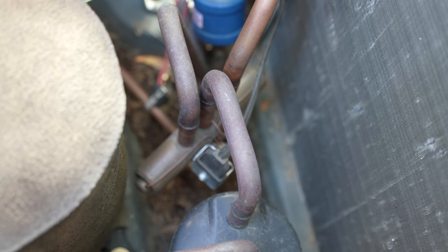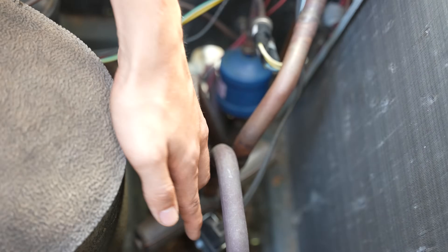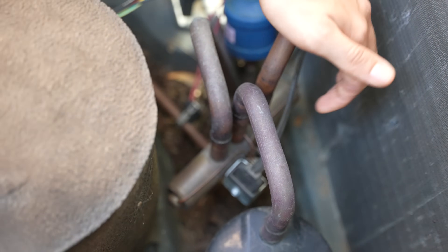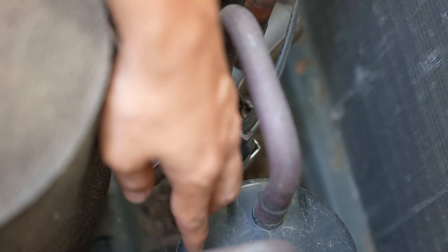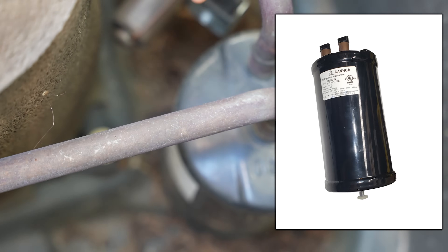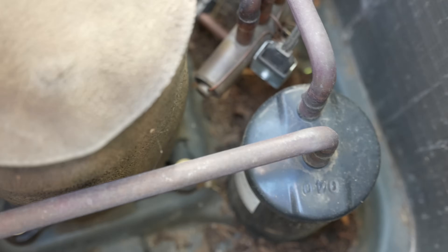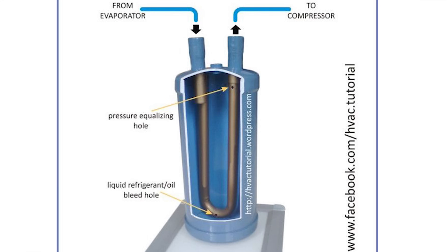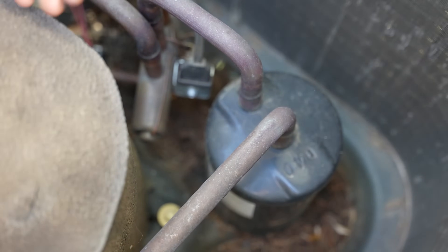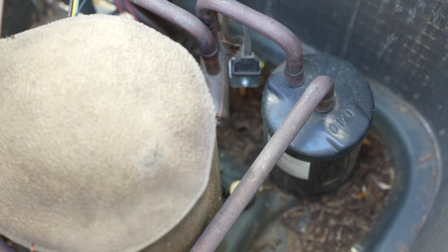This reversing valve has a plastic piece inside it that moves back and forth depending on whether you're in heat mode or cooling mode, directing the refrigerant to go through these two pipes or these two pipes. On the back of it we have the electrical solenoid — that's what powers it up. Once this is energized, that little plastic piece will switch positions. Right next to it, we have the accumulator. The purpose of the accumulator is to not allow any liquid refrigerant to get back into the compressor. Liquid refrigerant is bad for the compressor, so the accumulator catches any liquid refrigerant — by the time refrigerant reaches the compressor through the suction line, it should all be vapor.